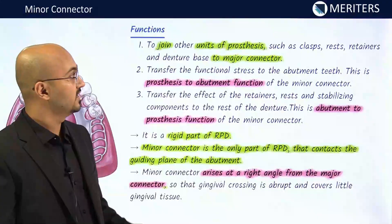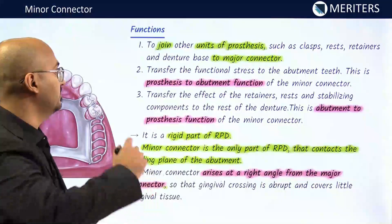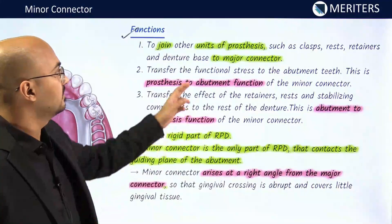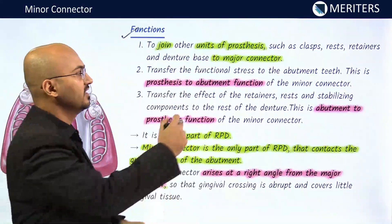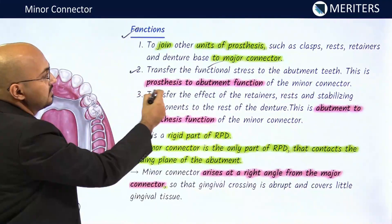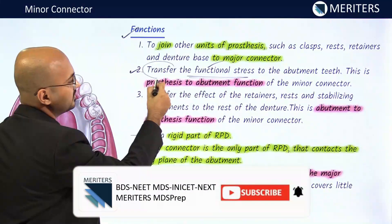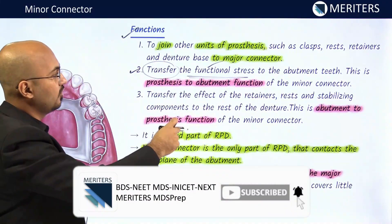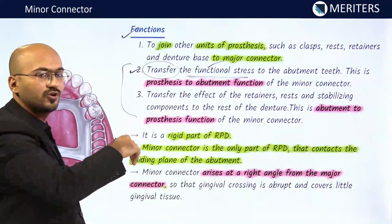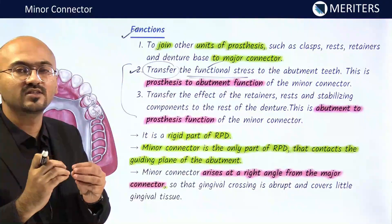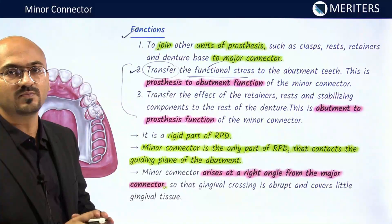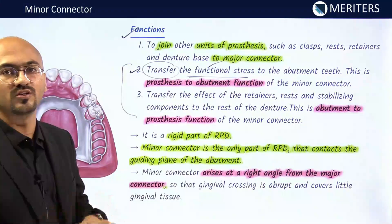The functions of a minor connector are: first, to join the units of the prosthesis — the clasp, rest, and retainers — to the major connector. Second, functional stresses: it transfers functional stresses from the prosthesis to the abutment and vice versa. It dissipates forces rather than concentrating any specific force on any specific tooth, distributing them over the abutments, teeth, mucosa, tissues, and arch.